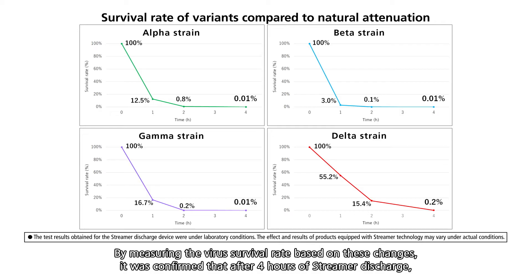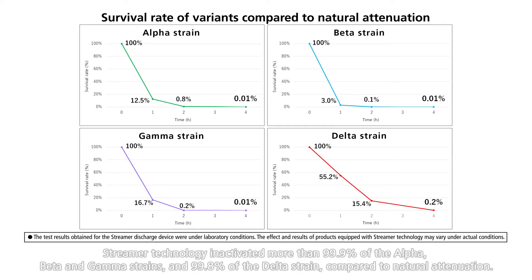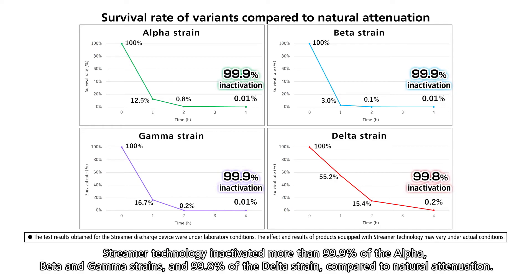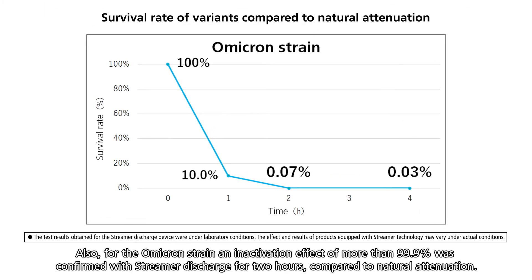By measuring the virus survival rate based on these changes, it was confirmed that after four hours of streamer discharge, streamer technology inactivated more than 99.9% of the alpha, beta, and gamma strains, and 99.8% of the delta strain compared to natural attenuation. For the Omicron strain, an inactivation effect of more than 99.9% was confirmed with streamer discharge for two hours compared to natural attenuation.